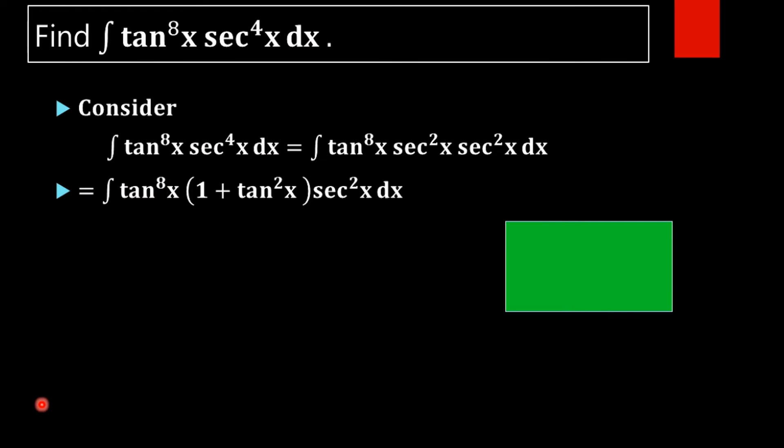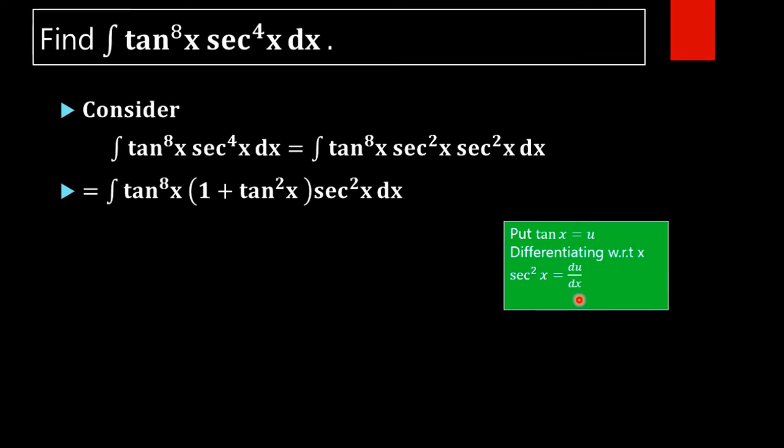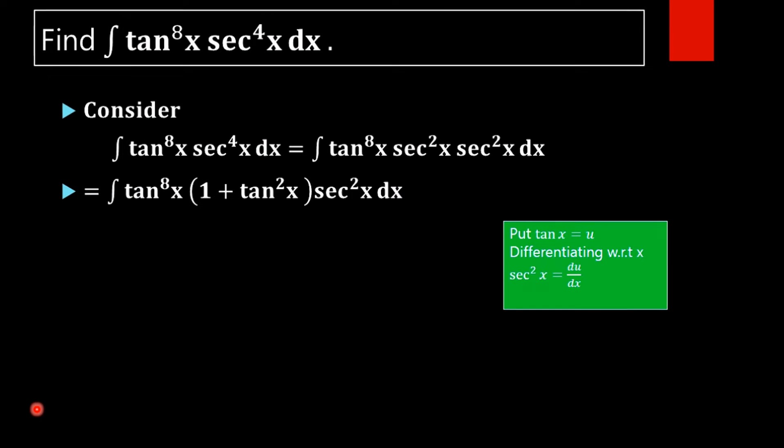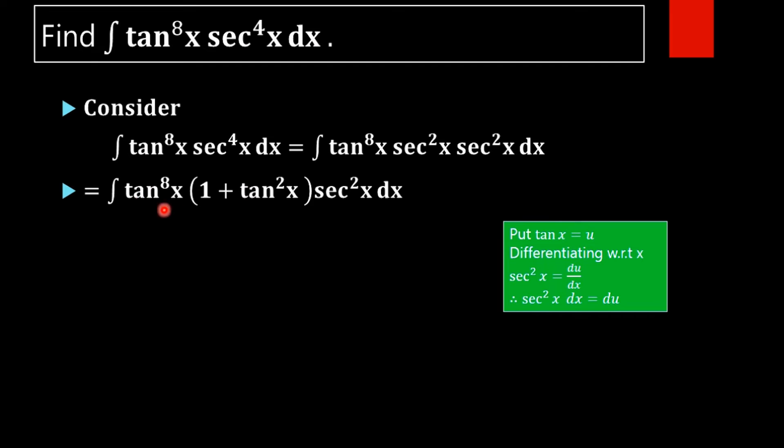Then we will get sec^2(x) dx as du. In order to make this function into an integrable form, we are substituting tan x as u, then differentiating with respect to x we will get sec^2(x) equals du/dx and sec^2(x) dx equals du. So we get the value of tan x and sec^2(x) dx in terms of u.